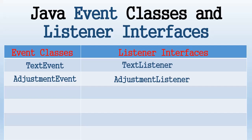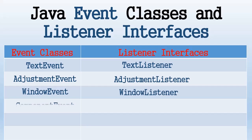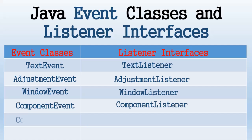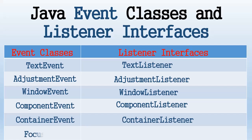For AdjustmentEvent we have AdjustmentListener. For WindowEvent we have WindowListener. For ComponentEvent we have ComponentListener. For ContainerEvent we have ContainerListener. And for FocusEvent we have FocusListener. These examples are useful for handling events and for creating event-driven programs.